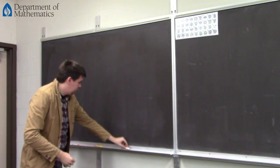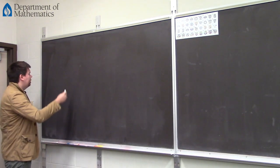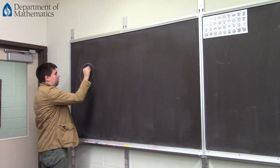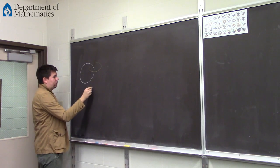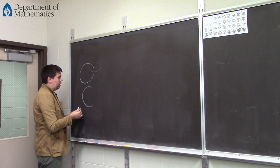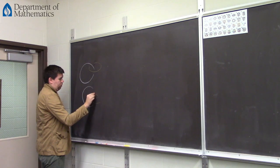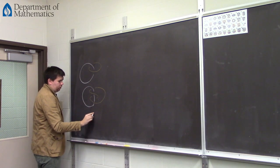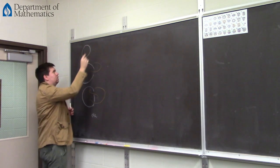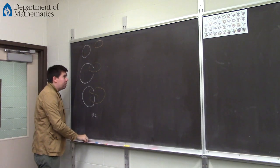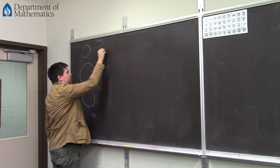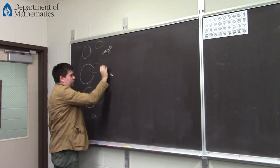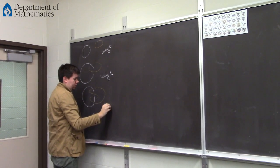So we want to develop a system for counting how linked components of a link are. Whatever system we develop, we want to keep the intuition that if your two components are this component and this component, we want to say it's linked once. And if it's this component and this component, then it's linked twice. And we want to say these are linked zero times.